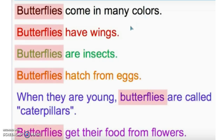Butterflies come in many colors. Butterflies have wings. Butterflies are insects. Butterflies hatch from eggs. When they are young, butterflies are called caterpillars. Butterflies get their food from flowers.